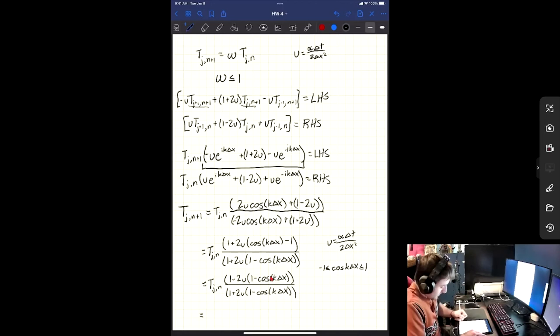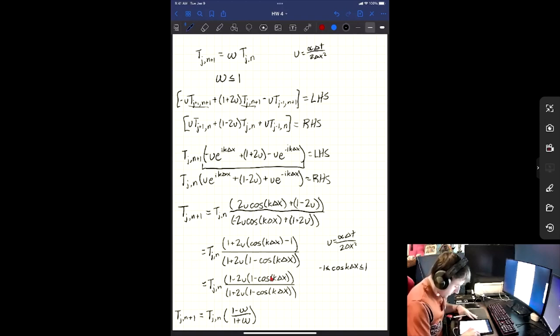So another way we can rewrite this is, we can throw in our omega that we had earlier and it will be 1 minus omega over 1 plus omega. And so omega can't be greater than 1. And so even if omega is 0, it is still 1 over 1, which means our factor in front of this is still 1, which is within our boundaries here. So that lets us prove that this does not shoot off into infinity because our factor in front of our tj n is less than or equal to 1 at all times.